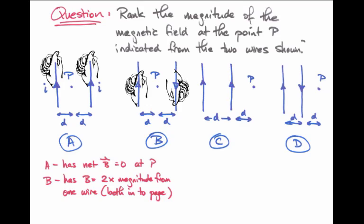Case B has a magnetic field that's twice as large as the magnetic field from any one of these wires. That's because when our thumb points along the direction of the two currents,